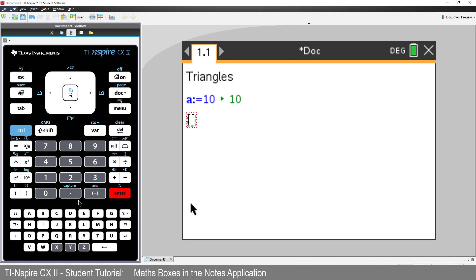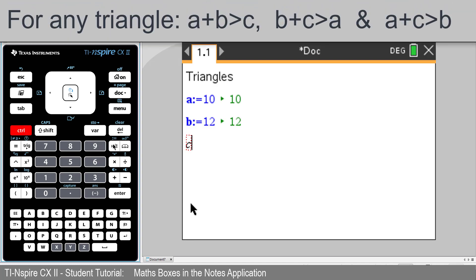We're automatically provided with a second math box. In here, I'll assign B equal to 12 and press enter. And assign C equal to 14. So I'm creating a triangle with side lengths 10, 12, and 14.